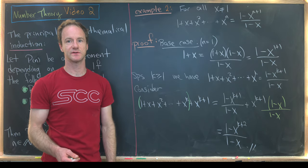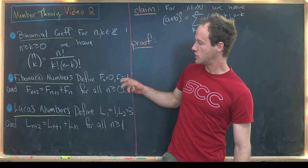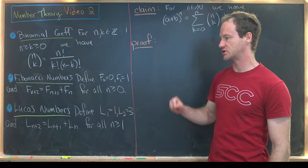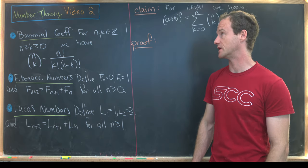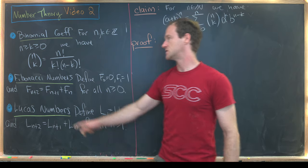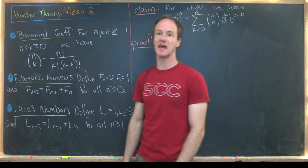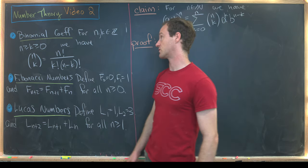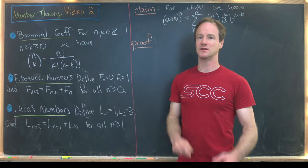Now that we've looked at some basic examples, let's look at a couple of other objects that really lend themselves to proof by induction. We'll look at three new objects: binomial coefficients, Fibonacci numbers, and Lucas numbers. These are all related to each other with nice combinatorial identities. For integers n and k with n greater than or equal to k greater than or equal to 0, the binomial coefficient n choose k equals n factorial over k factorial times (n minus k) factorial.